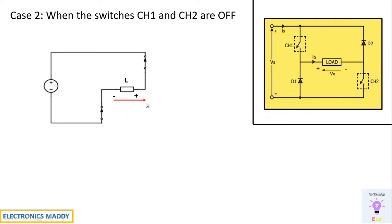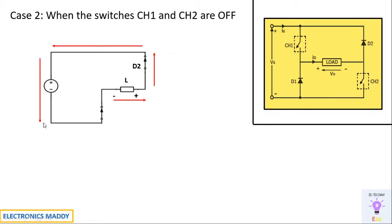According to Lenz's law, current will continue to flow in the same direction, and the inductor will reverse its polarity — it was plus and minus, so it reverses to allow current to flow in the same direction. As a result, plus appears across the anode of D2 making it forward biased, and minus appears across the cathode of D1 making D1 forward biased. Hence D1 and D2 are forward biased and current flows in this particular direction back to the load.